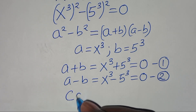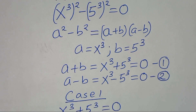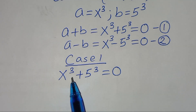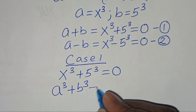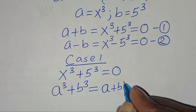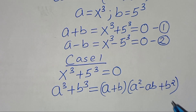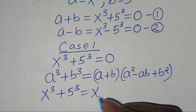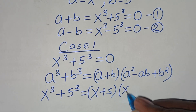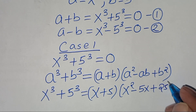Now let's start with equation 1, let's call this case 1, which is x to power 3 plus 5 to power 3, this is equal to 0. This is the sum of two cubes expressed as a to power 3 plus b to power 3, which you can express as a plus b, times a squared minus a times b plus b squared. So x to power 3 plus 5 to power 3 is the same thing as x plus 5, times x squared subtract 5x plus 5 squared, which is 25, this is equal to 0.